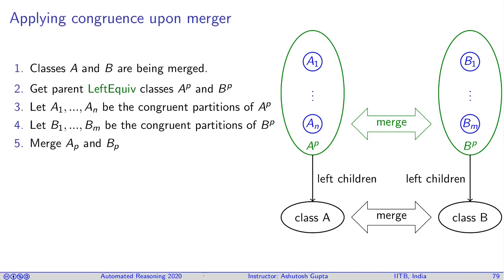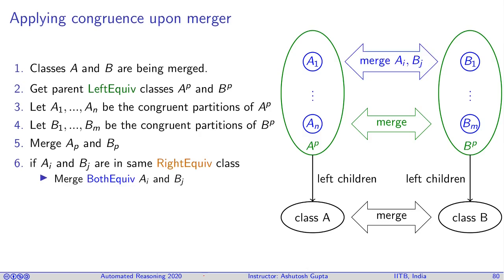Now we need to check whether some Ai and Bj also have the same right-equi class. If that is the case, they should belong to the same both-equi class and should be merged. You iterate over these partitions, pick Ai and Bj, and check if they have the same right-equi class. If so, merge them — congruence must be applied. Take their roots, insert equality between the roots of those classes, add it into equality reasoning, and then things carry on.